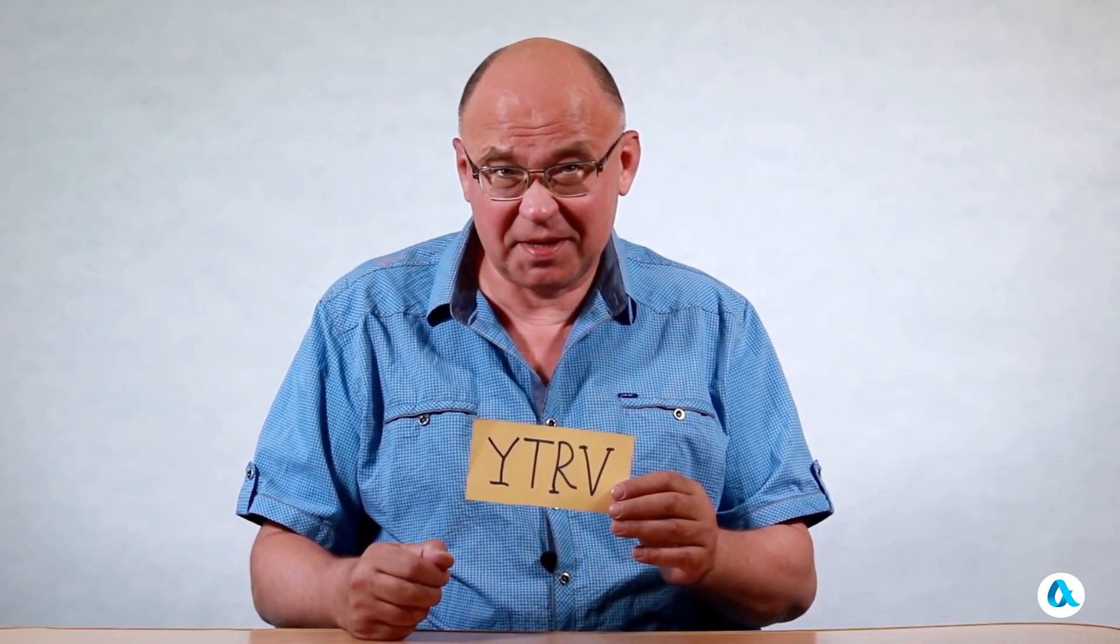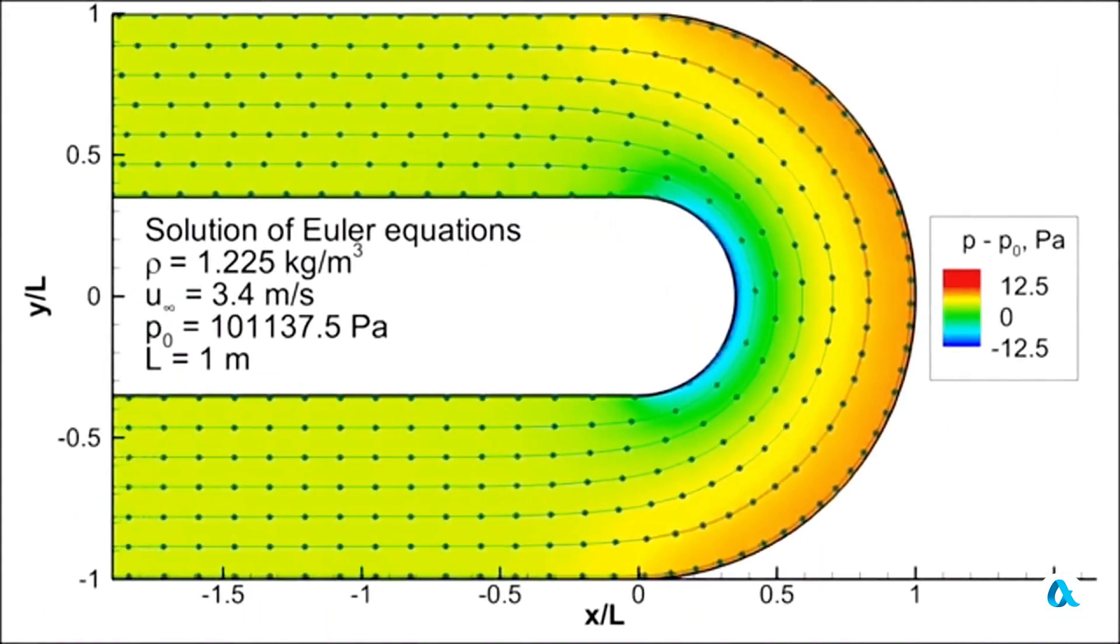And of course, I gotta emphasize that everything said so far applies to the model without vortex flow, of an ideal, incompressible, non-viscous fluid. The calculations of the current in this model were performed by our subscriber, YTRV. And now we have the opportunity to analyze them in depth and derive valuable insights from the obtained results.